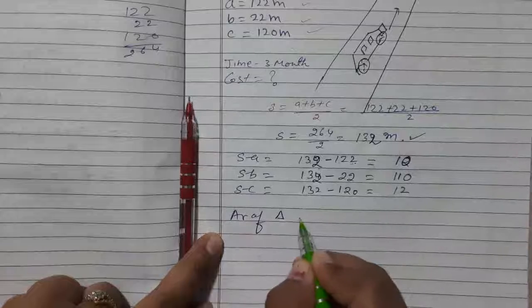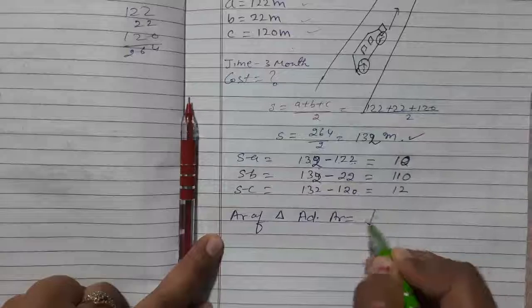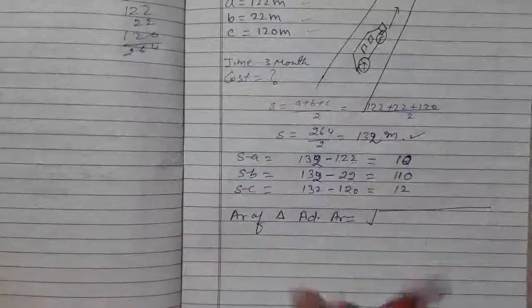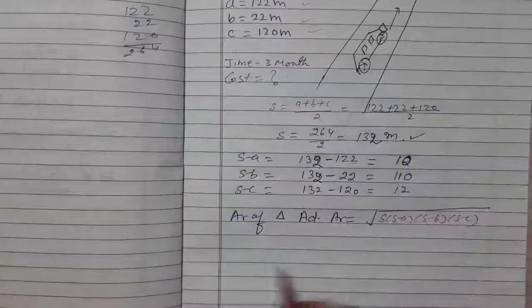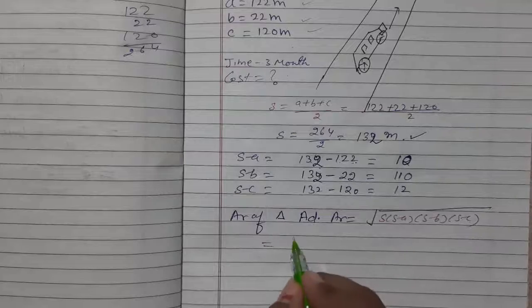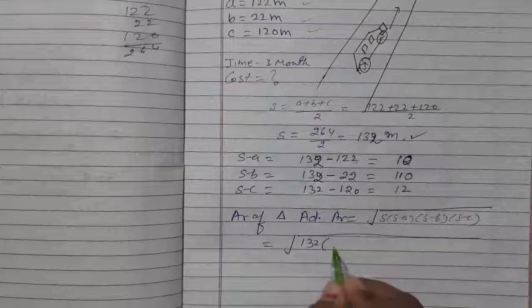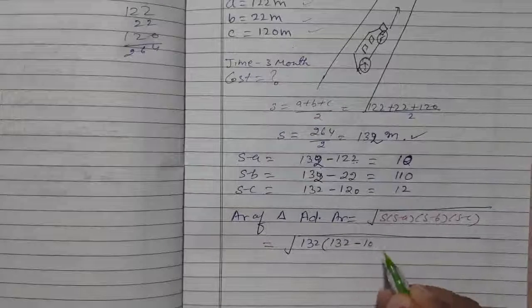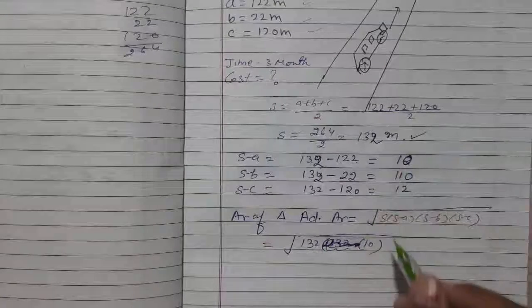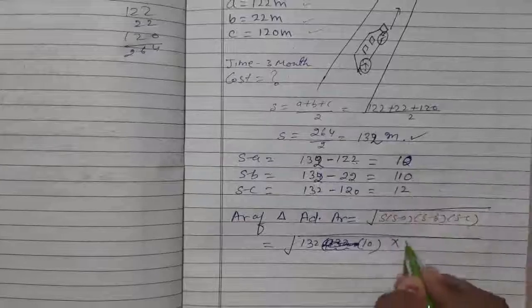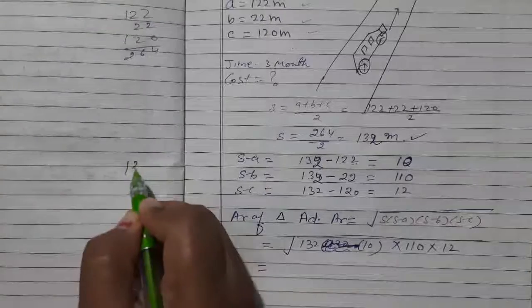So now area of the rectangular advertisement area, according to Heron's formula, we will put all the values. Semi-perimeter is 132, s minus a is 10, s minus b is 110, and s minus c is 12.